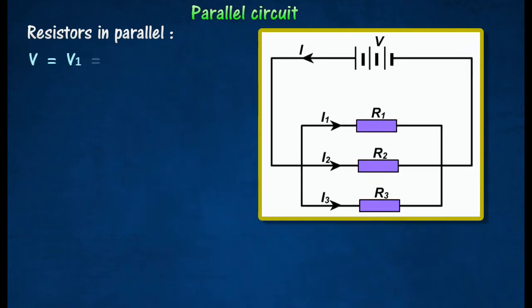The potential difference across each of the resistors is the same. The current I in the main circuit is equal to the sum of the currents through the separate branches.